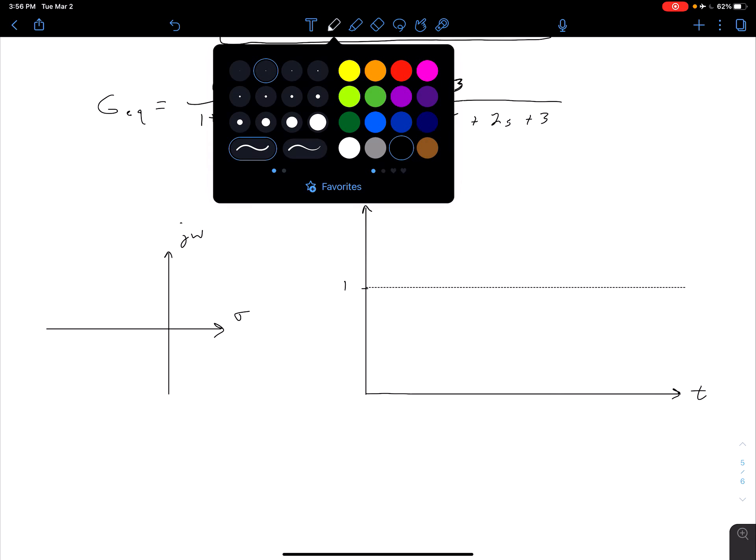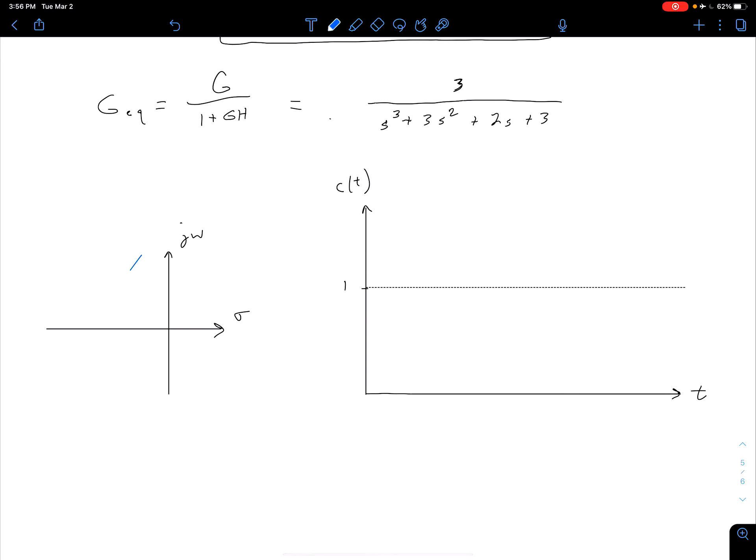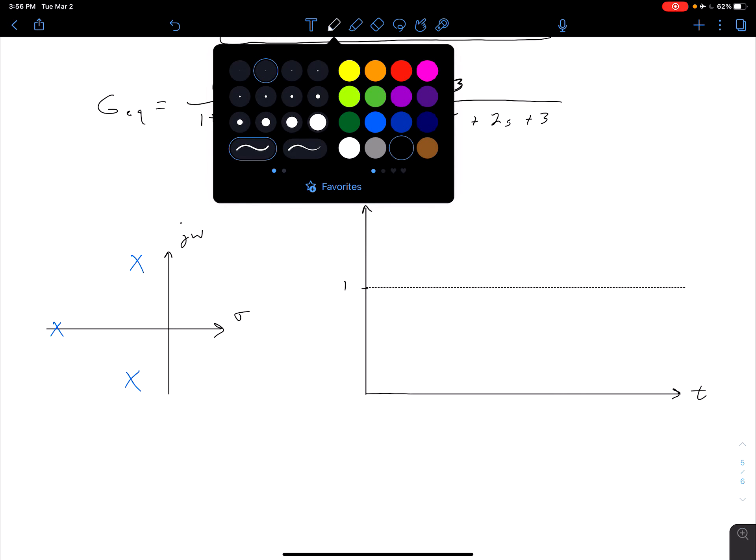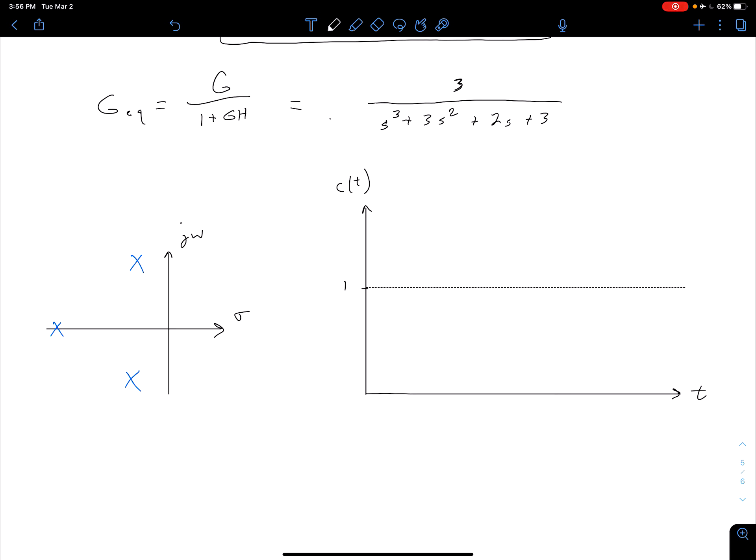And our three poles are going to be located at points roughly here and here. So we have a complex pair there and then a real pole here. And so just to label some values if you wanted to go through and confirm that these are the pole locations. So the real part of these complex poles is negative 0.164. The imaginary part is plus or minus j times 1.047.